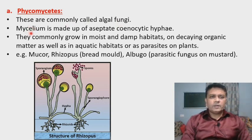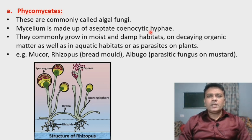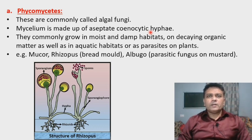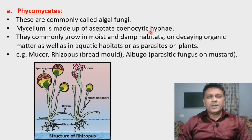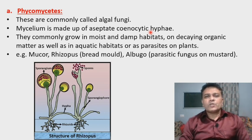The mycelium of Phycomycetes is made up of aseptate coenocytic hyphae. The thread-like structures are called hyphae, and they may be uninucleate or multinucleate. They show absence of partition or septa between adjacent nuclei, hence they are called non-septate or aseptate coenocytic hyphae.